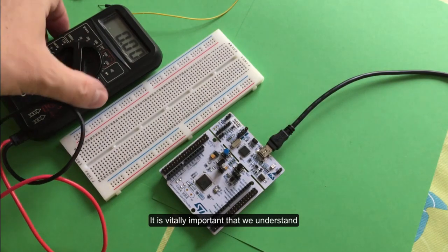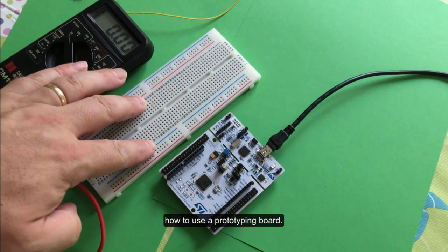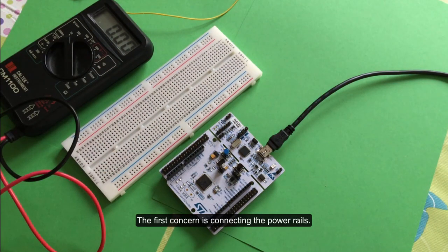It's vitally important that we understand how to use a prototyping board. The first concern is the power rails.